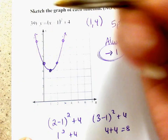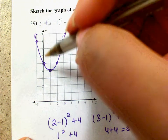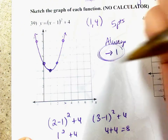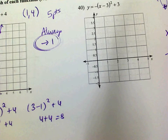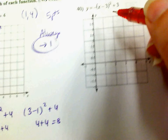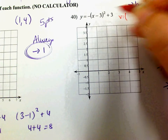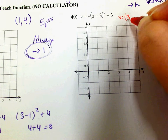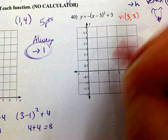Do not draw a V — that's an absolute value function. Make it a curve. So let's do number 40. Let's talk about where we're going. Our vertex: it's opposite on the inside, so positive 3. Same on the outside, so it's at the point (3, 3).